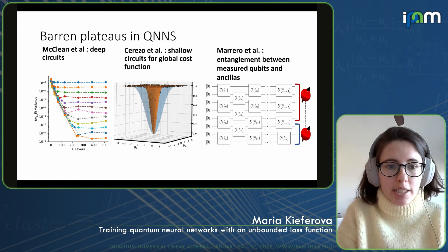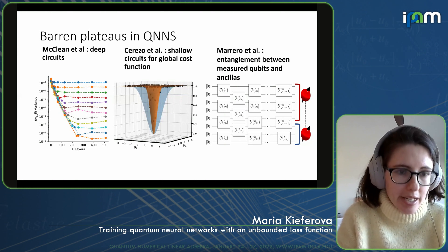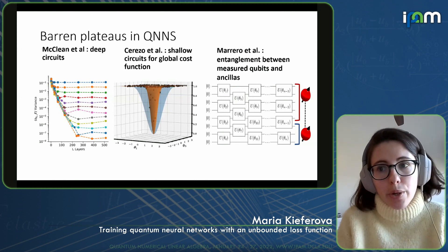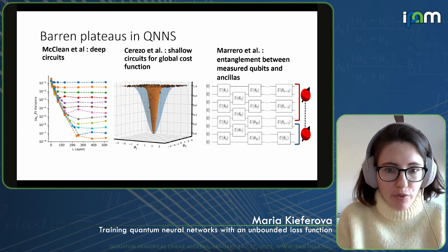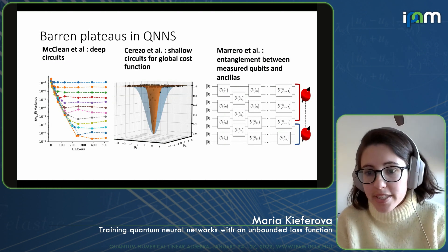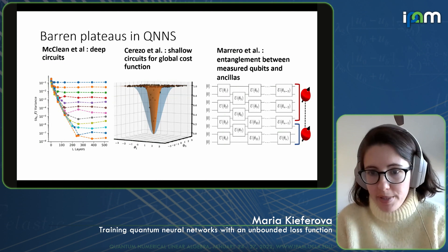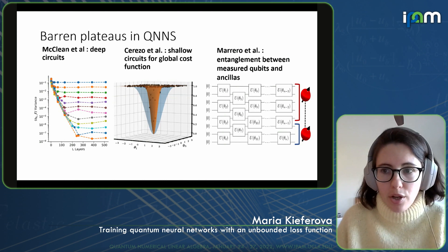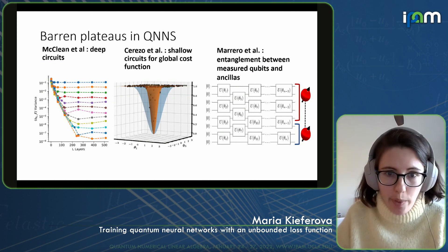Barren plateaus are unfortunately extremely common in quantum neural networks. The first barren plateaus were reported by a team from Google in deep variational circuits. Later, Cerezo et al. showed that even with a shallow circuit, if the cost function is what they call global, the gradient will be zero for almost all parameters except a very narrow subset. My collaborators and I also recently showed that entanglement between our measured visible qubits and any ancillas can also lead to a type of barren plateau — so entanglement can not only help us, but also hurt us by significantly decreasing the gradient.